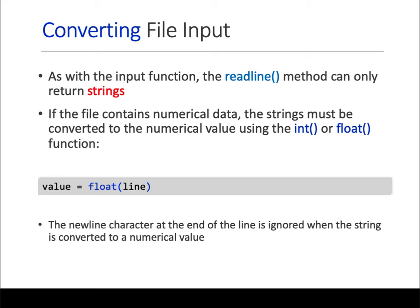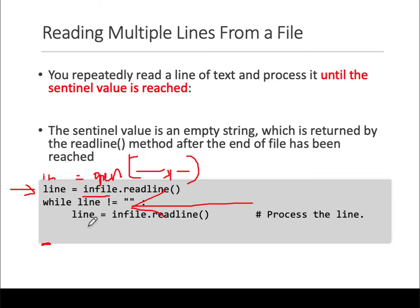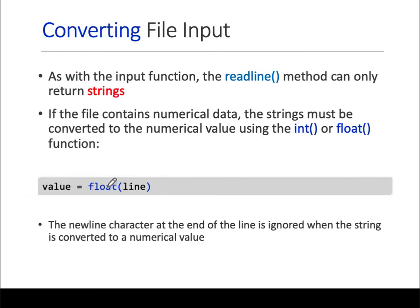An important note: as with the input() function from previous lectures, whatever you read from a file is a string. If you need numerical input, you have to cast it to a float or an integer. Similarly, readline() can only return strings, and you will have to cast it to a float if there are mathematical or numeric values. The variable 'line' contains the information read, so you convert that variable into a float if needed. The newline character at the end is ignored when the string is converted to a numerical value.